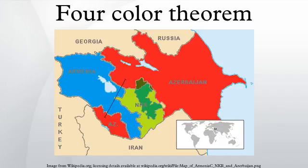In mathematics, the four-color theorem, or the four-color map theorem, states that given any separation of a plane into contiguous regions, producing a figure called a map, no more than four colors are required to color the regions of the map so that no two adjacent regions have the same color. Two regions are called adjacent if they share a common boundary that is not a corner, where corners are the points shared by three or more regions.